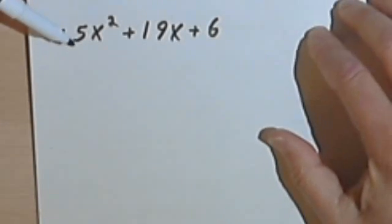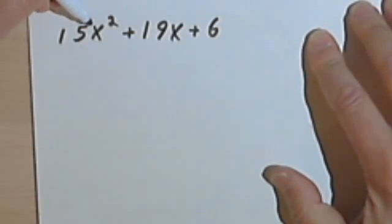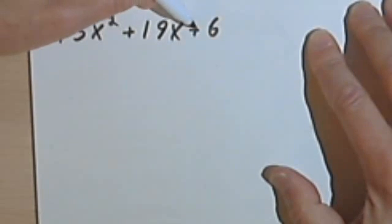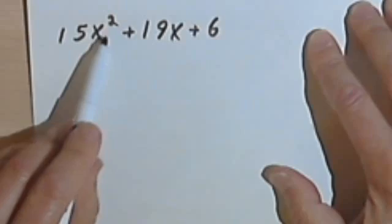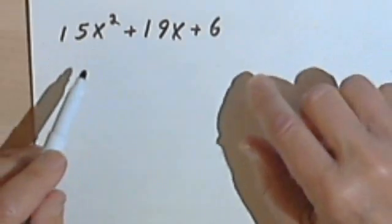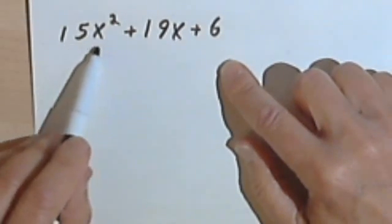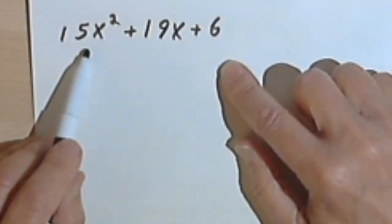We're going to start out with this polynomial. I've got 15x² + 19x + 6. It's a second-degree polynomial because I've got an x², and my first coefficient is greater than 1.